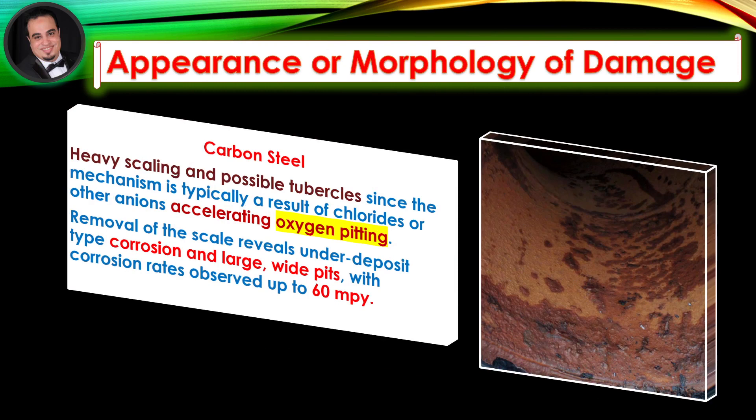Appearance or morphology of damage. For carbon steel: heavy scaling and possible tubercles, since the mechanism is typically a result of chlorides or other anions accelerating oxygen pitting. Removal of the scale reveals under-deposit type corrosion and large, wide pits, with corrosion rates observed up to 60 mils per year.